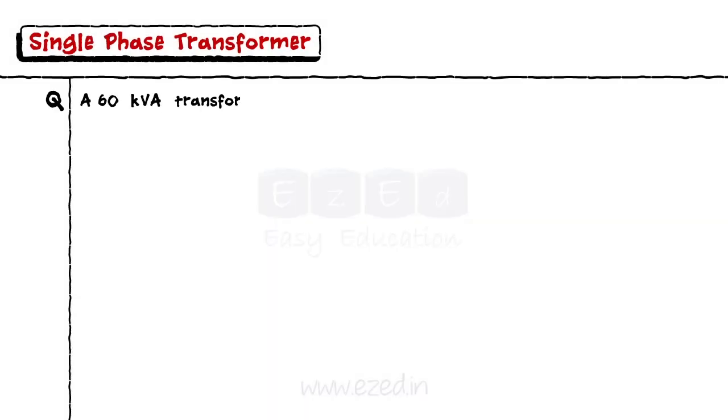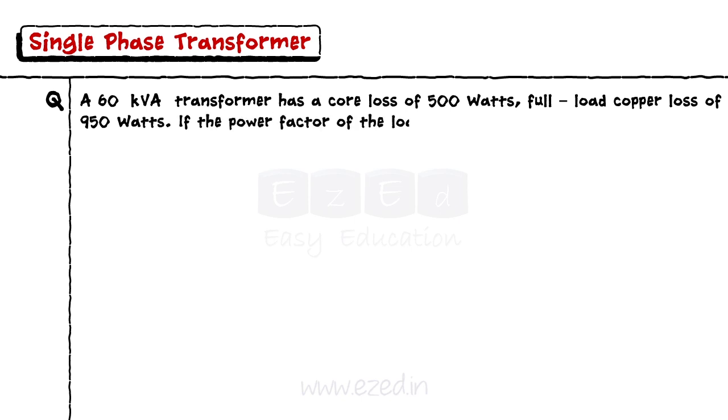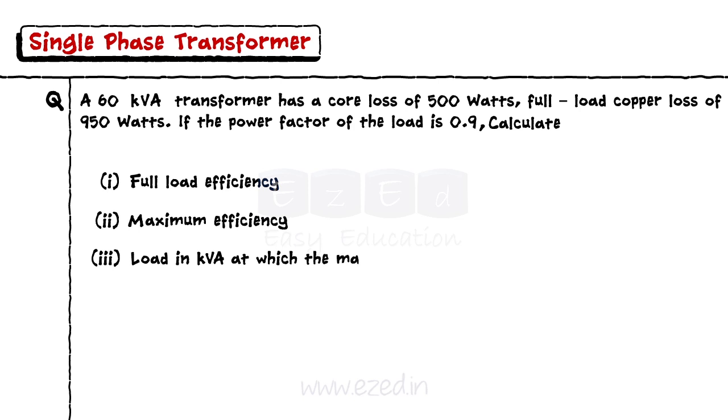A 60 kVA transformer has a core loss of 500 watts, full load copper loss of 950 watts. If the power factor of the load is 0.9, calculate the full load efficiency, maximum efficiency, and the load in kVA at which the maximum efficiency occurs.